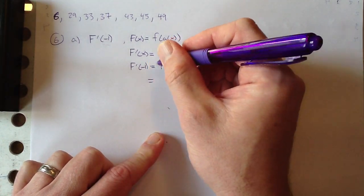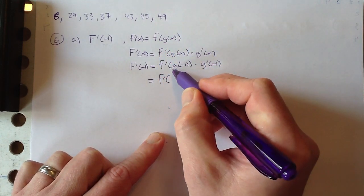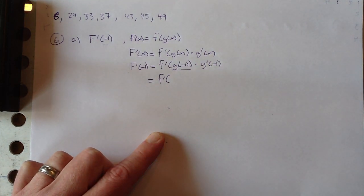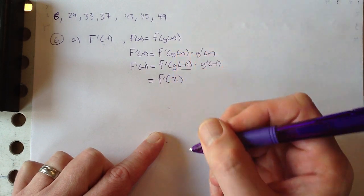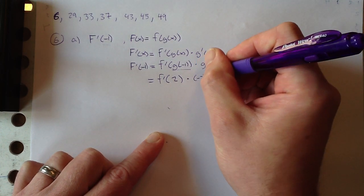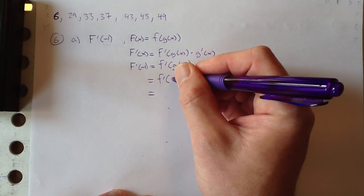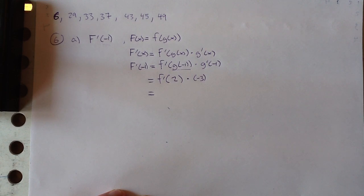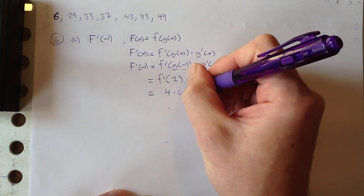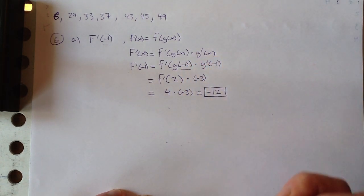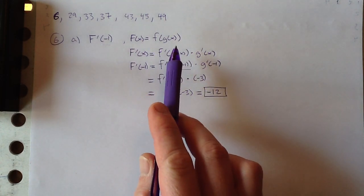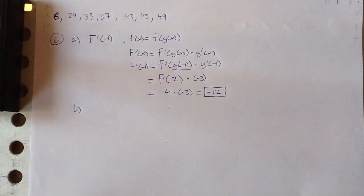I need to look at the table to find these values. I've got to find the inside first. g of negative 1, according to the table, is 2. g prime of negative 1 is negative 3. Take a look at that table and make sure you understood how to get numbers out of it. Then I just need to find f prime of 2. Looking at the table, f prime of 2 is 4. So that's 4 times negative 3, which is negative 12. A lot like the problems we did in section 3-4, where we had to look numbers up from a table.